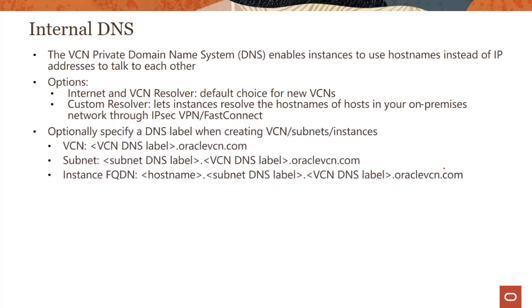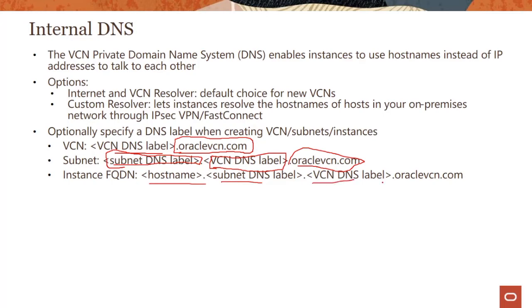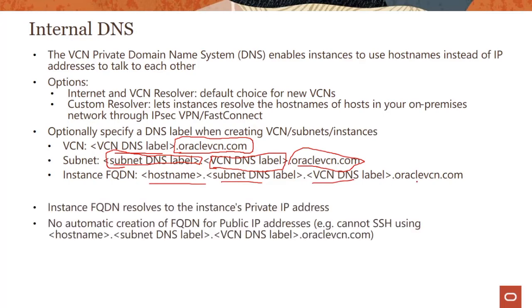When you create a VCN, a subnet, or an instance you can specify a DNS label. If you don't specify one, we create it for you. For a VCN, the format is the VCN DNS label dot oraclevcn.com — you cannot delete this part, it always stays, but you can change it. For a subnet you similarly have options: the subnet DNS label followed by the VCN DNS label, because your subnet is part of a VCN, and then the oraclevcn.com suffix. For a host fully qualified domain name it is: hostname dot subnet name dot VCN name dot oraclevcn.com — which seems pretty logical.